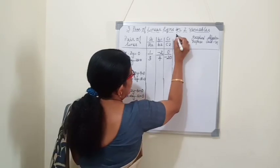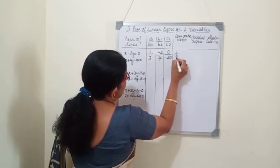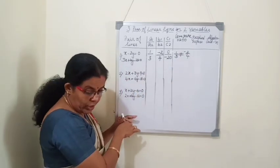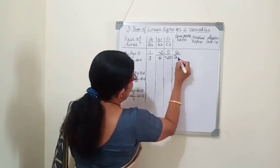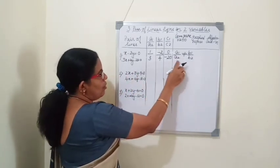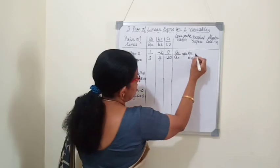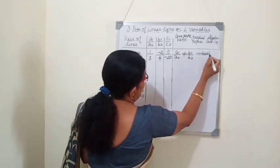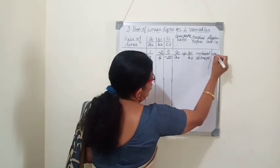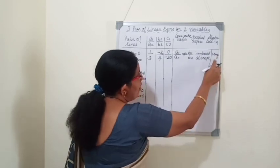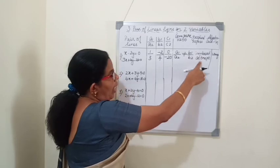Now we will compare the ratios. We write 1 by 3 is not equal to minus 2 by 4, so these two ratios are not equal. Therefore a1 by a2 is not equal to b1 by b2. If a1 by a2 is not equal to b1 by b2, then the graphical representation will be that the lines will intersect at a point. The algebraic interpretation is that we will get a unique solution — one solution.